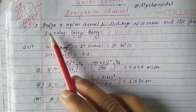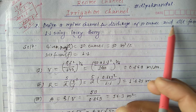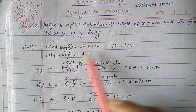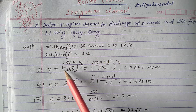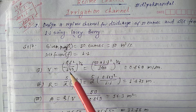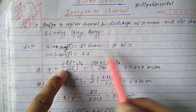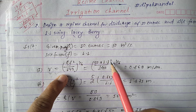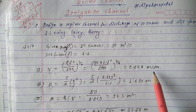The question: design a regime channel for a discharge of 50 cumec and shield factor 1.1 using Lacey's theory. Given: Q = 50 m³/s and shield factor f = 1.1. Step 1 — determine velocity V = (Q·f²/140)^(1/6). Substituting Q = 50 and f = 1.1: V = (50 × 1.1²/140)^(1/6), which gives V = 0.869 m/s.